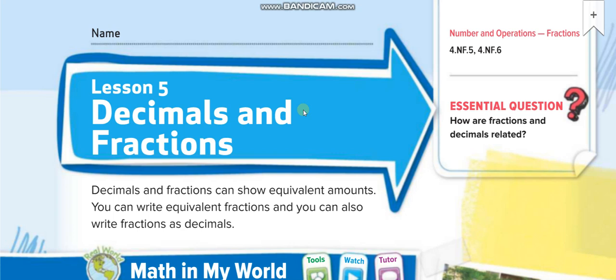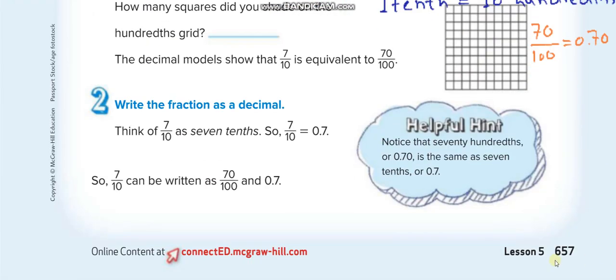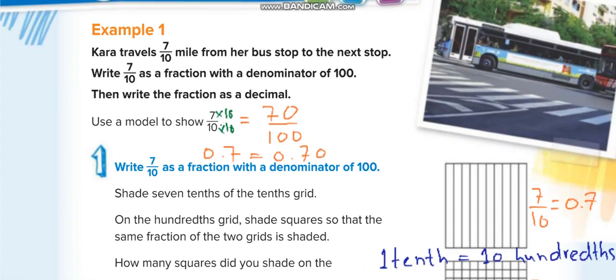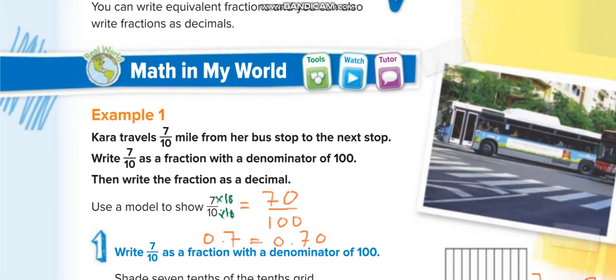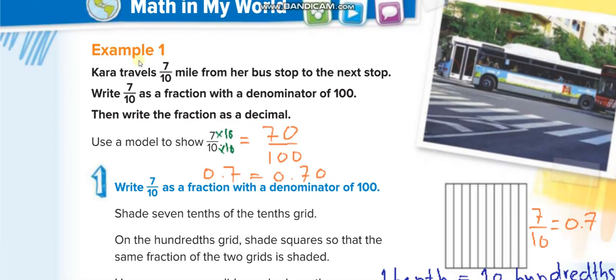Hey everyone, welcome back to my channel Learn Math with Mr. Saad for another video lesson. Today's lesson is for Grade 4, Chapter 10, Lesson 5: Decimals and Fractions, page number 657. In this lesson, let's see Example 1. Kara travels 7 over 10 mile from her bus stop to the next stop.